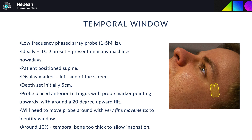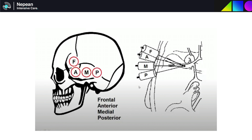Initially set your depth to around five centimeters and place the probe anterior to the tragus with the probe marker pointing upwards with around a 20 degree upward tilt. You need to move the probe around with very fine movements to identify this small temporal window, and unfortunately around 10 percent of people have temporal bone that is just too thick to allow a window to be found, particularly in slightly older patients.